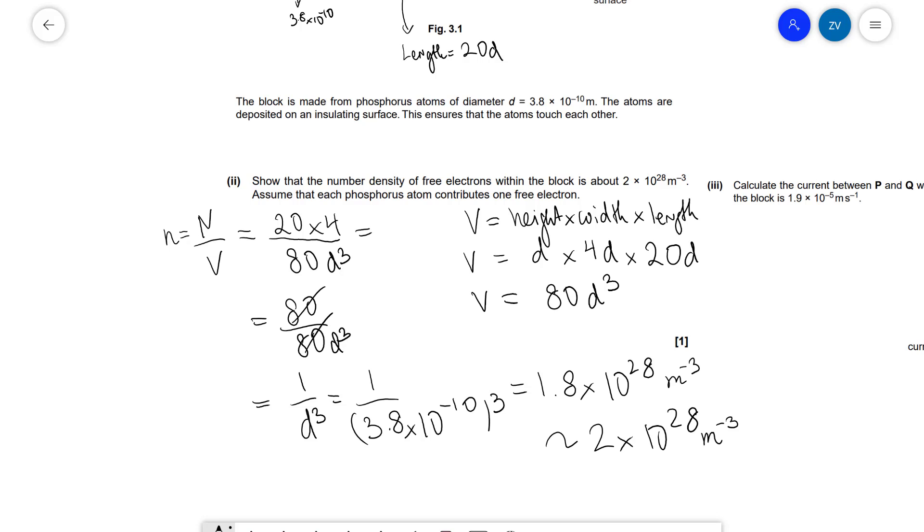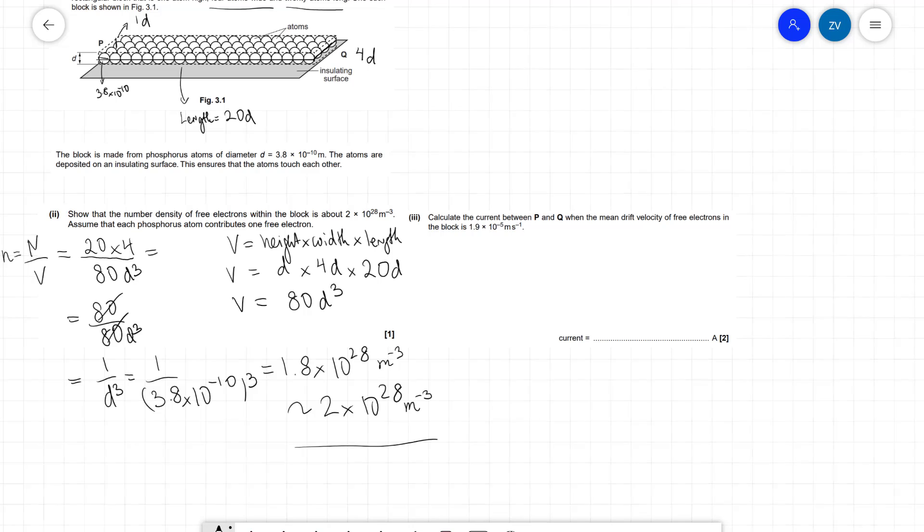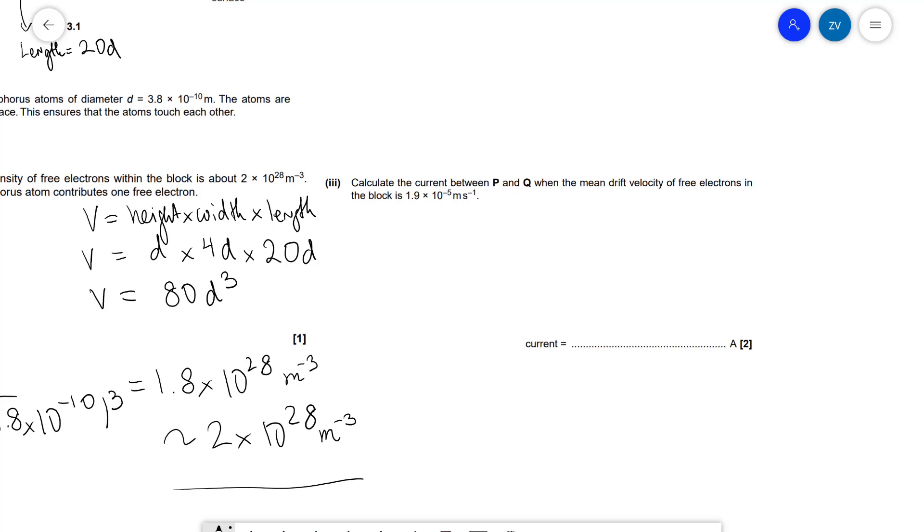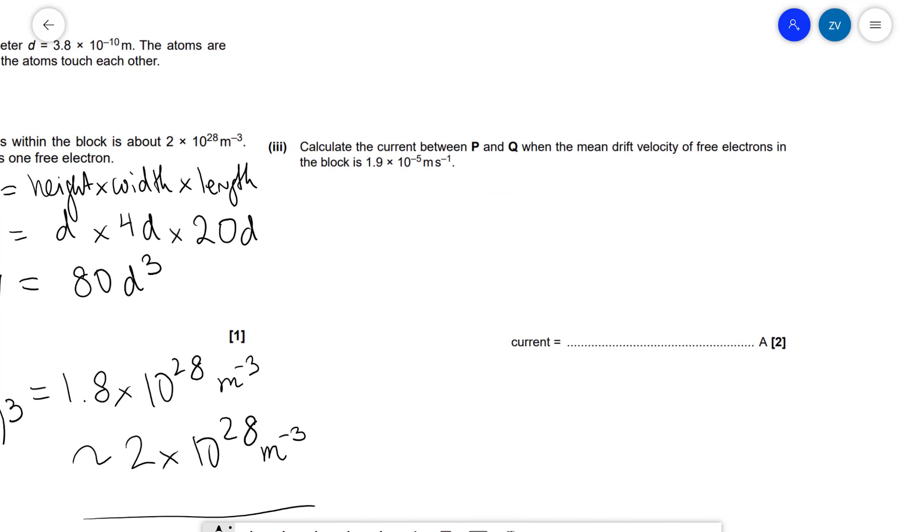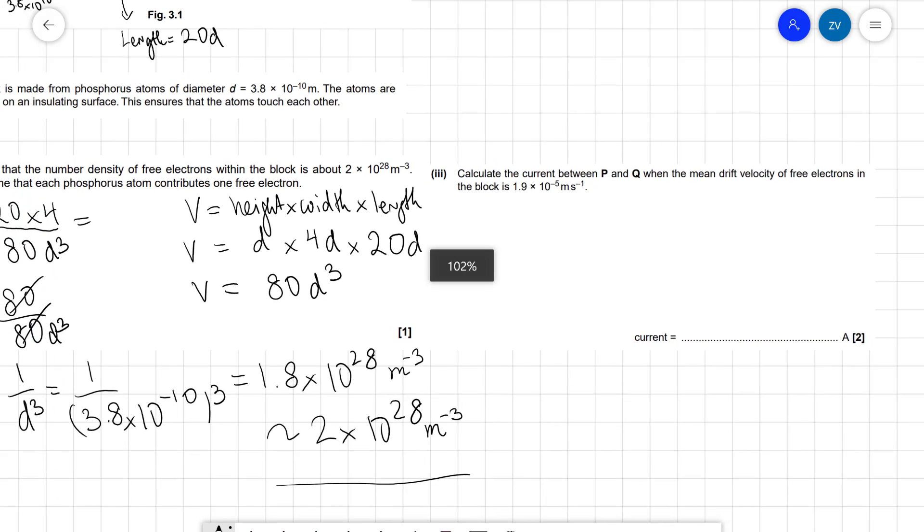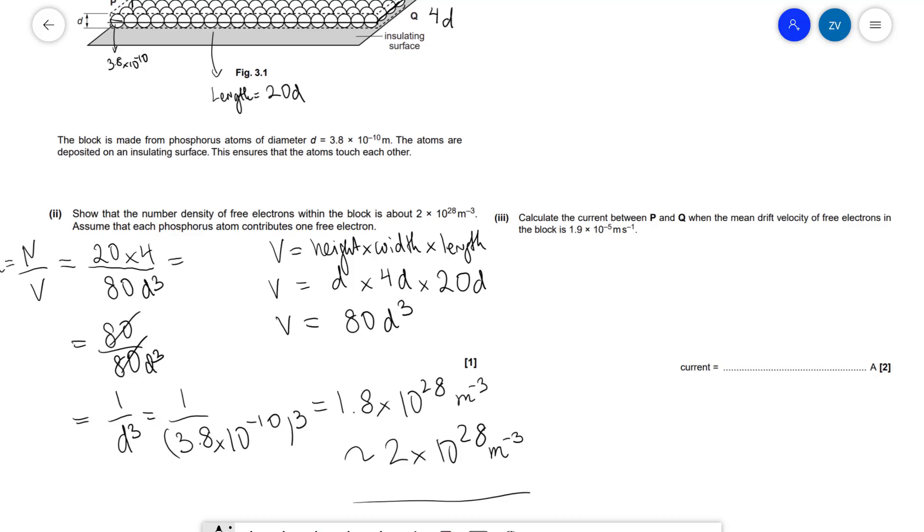Okay guys, so now that we have our number density, let's actually calculate the current between P and Q when we're given the mean drift velocity to be about 1.9 × 10⁻⁵. So let's see whether we can fit both of these questions on there. Okay, well let's start off by writing our equation, so we know that I is equal to nAev.